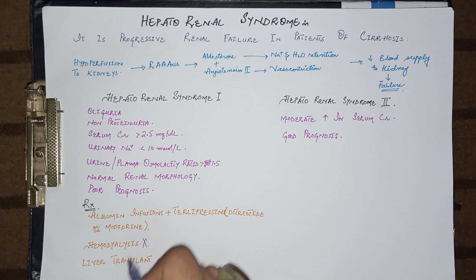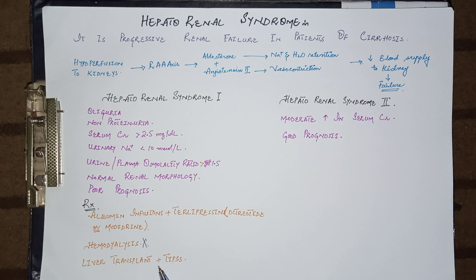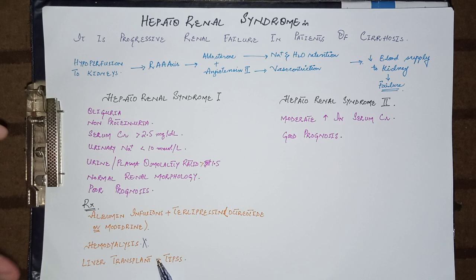Treating the underlying cause can improve hepatorenal syndrome. Liver transplant, along with TIPS — that is transjugular intrahepatic portosystemic shunt — in which a stent is placed between the portal vein and hepatic vein, improves portal hypertension and decreases ascites. As a result, there is improvement in renal function as well.